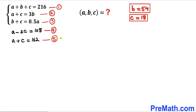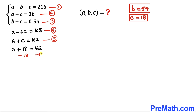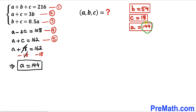For our final step, let's focus on equation five. Our c value is 18, so replacing that gives a plus 18 equals 162. Subtracting 18 from both sides — the 18s cancel — so our a value turns out to be 144.